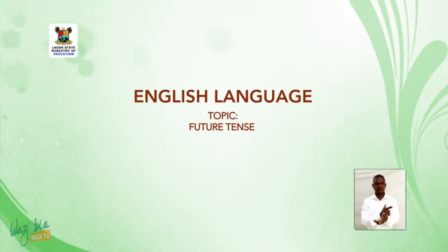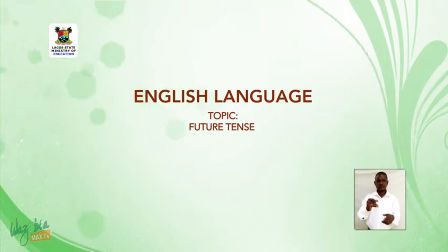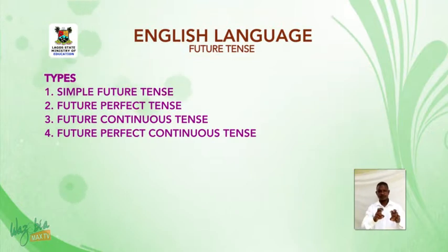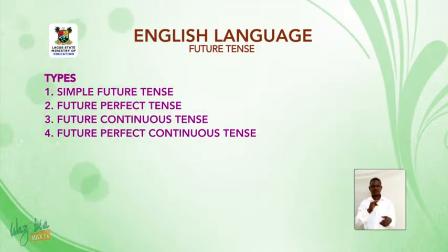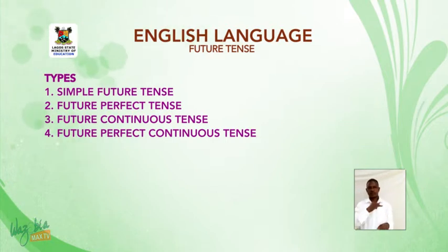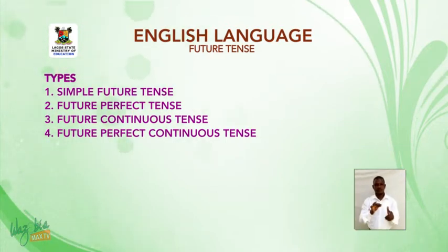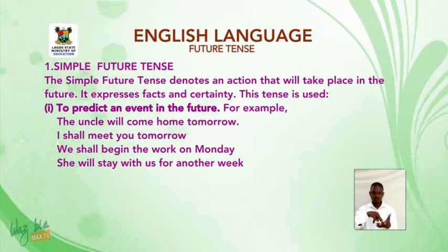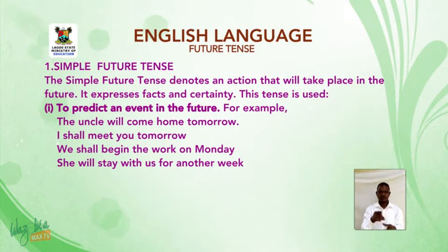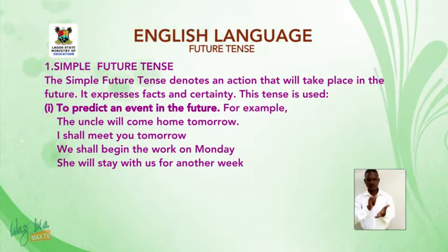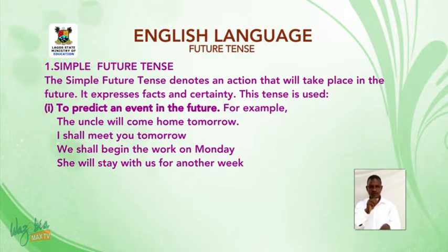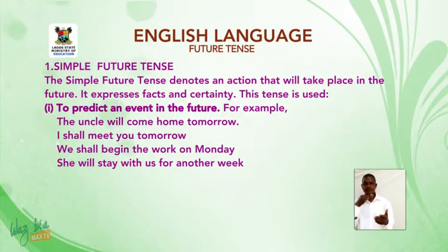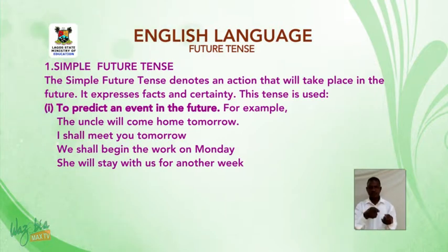You are welcome to the second part of today's lesson. The topic remains future tense. In the last class, I defined future tense and gave you the four types. Let us start with the simple future tense. The simple future tense denotes an action that will take place in the future. It expresses facts and certainty.